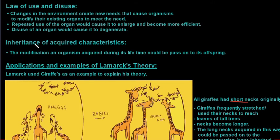The law of use and disuse says changes in the environment create new needs that cause organisms to modify their existing organs to meet the need. Repeated use of the organ would cause it to enlarge and become more efficient, while disuse of an organ would cause it to degenerate.